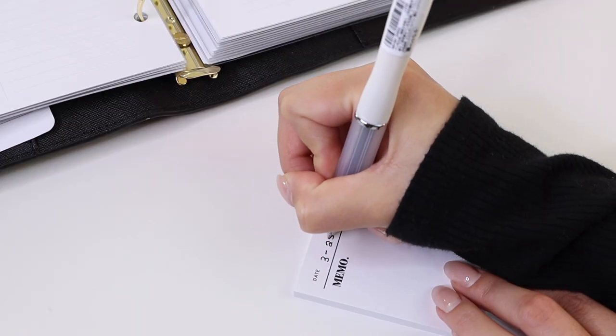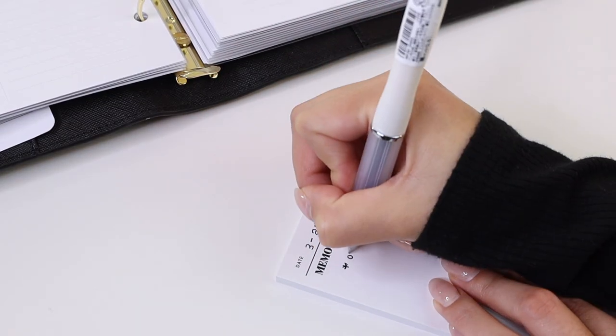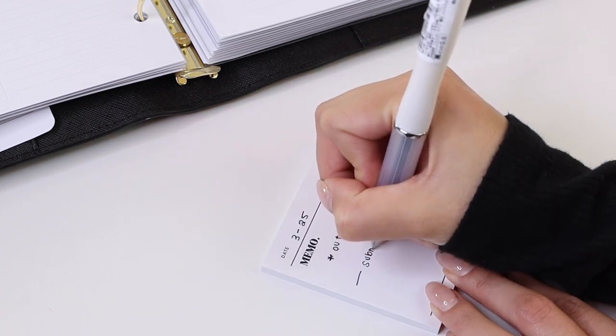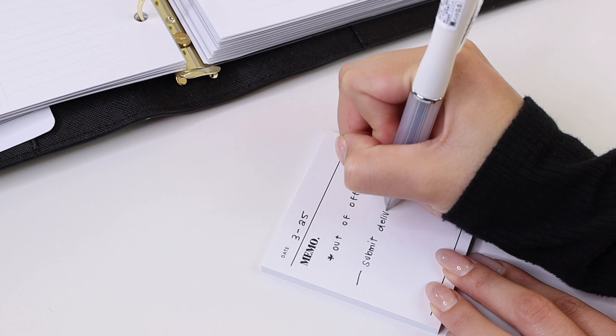We'll go ahead and write the date up at the top, write down any details in the memo section, and then file this away in our planner or whatever we're using to keep organized.